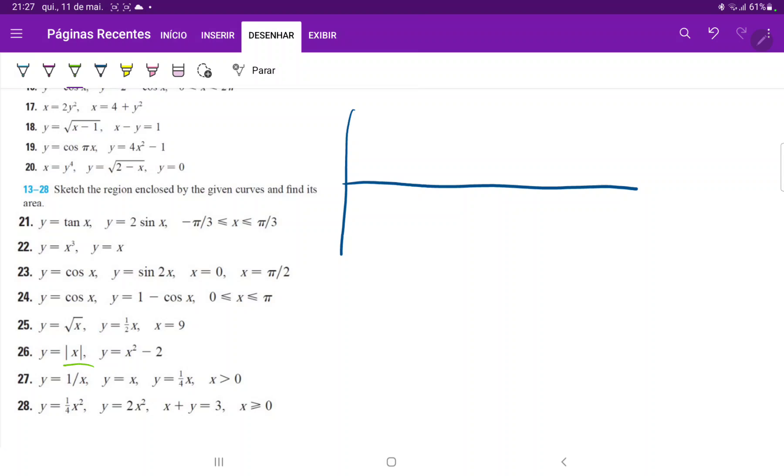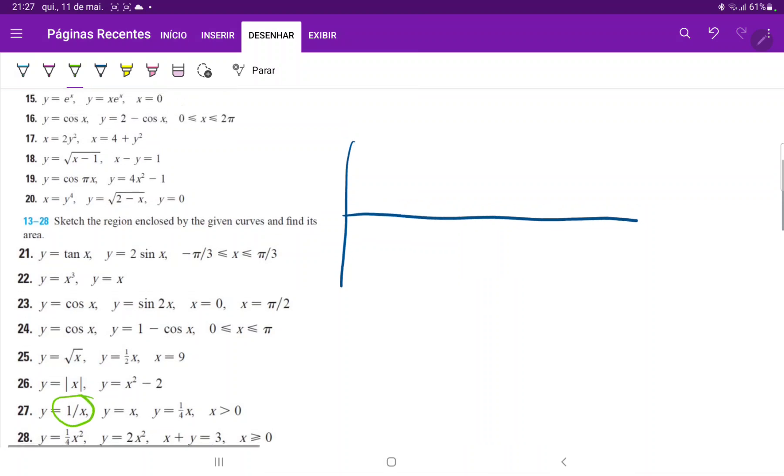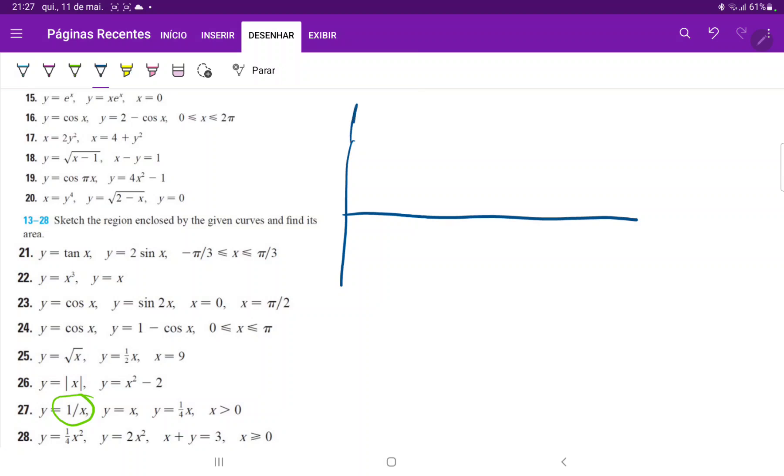The first curve is y equals 1 over x. This is your standard rational curve. Let's plot a few points to make our lives easier. We have the points 1, 1, then 2, 1 half, 3, 1 third, 1 half, 2, and so on. So this is a curve that looks like this. And this is the curve y equals 1 over x.